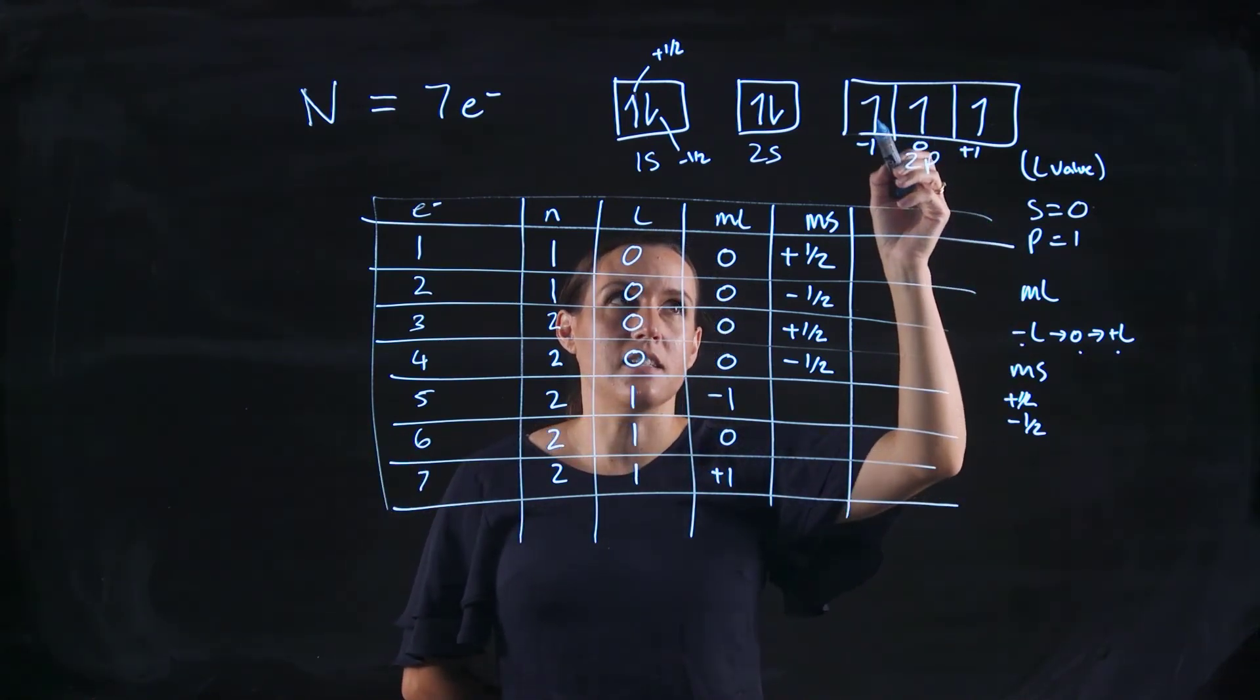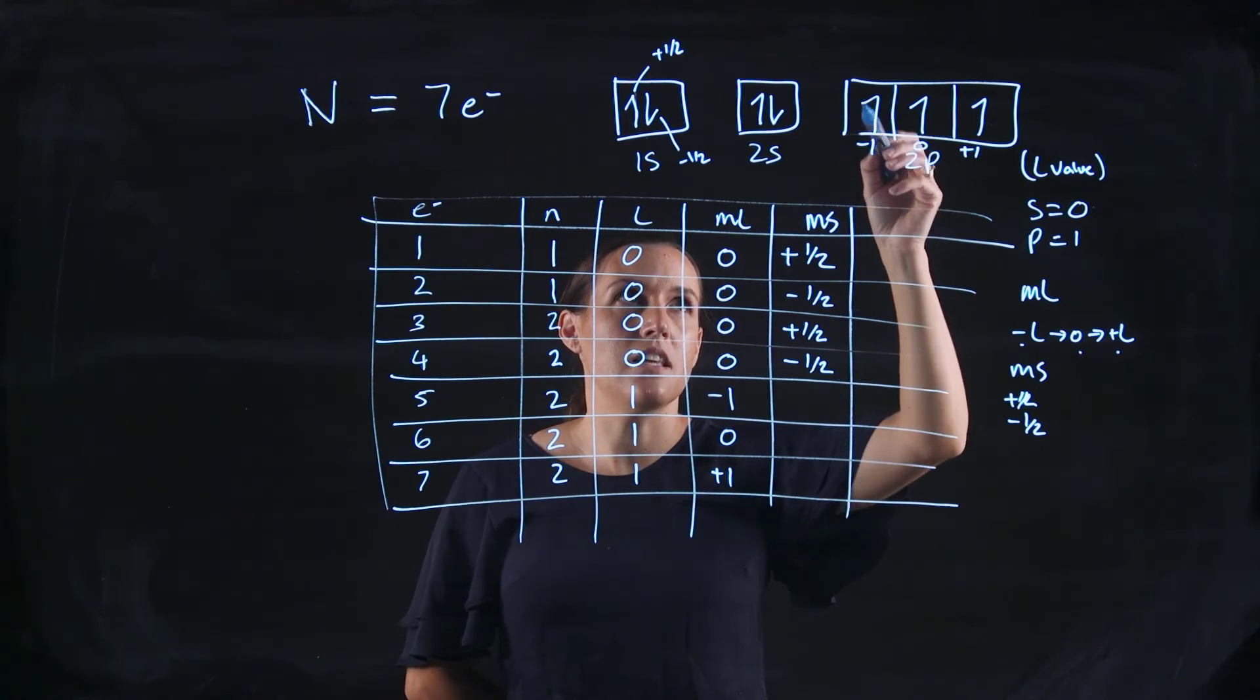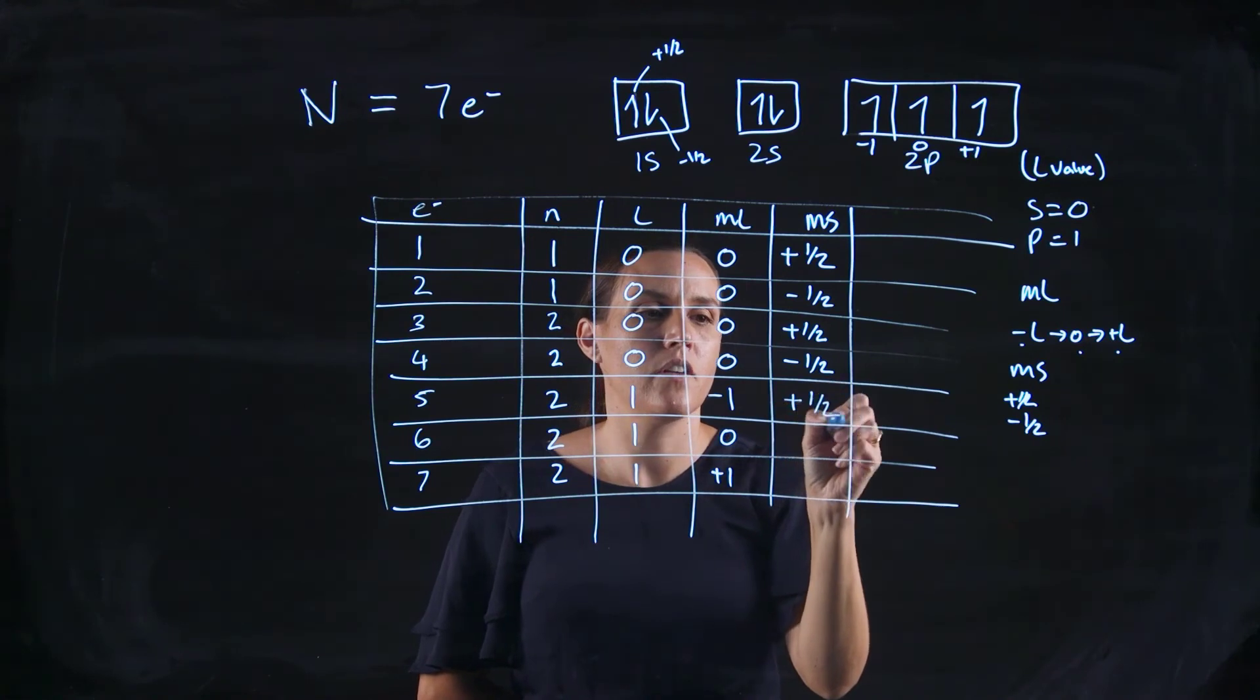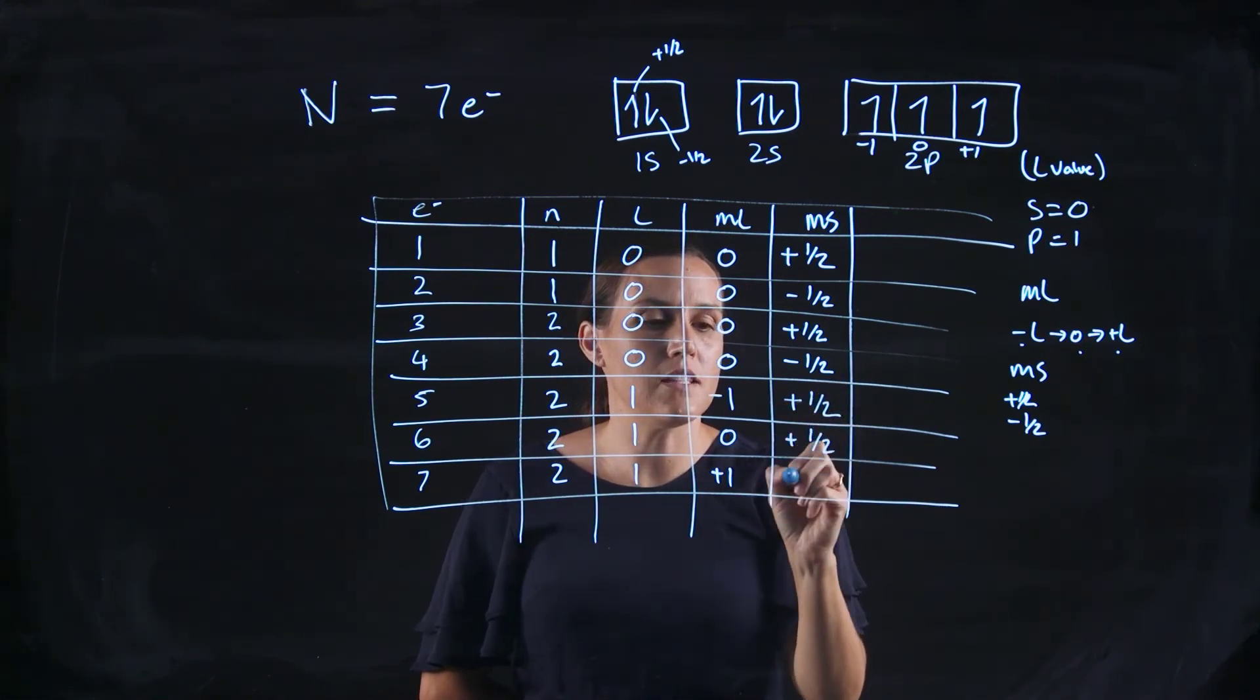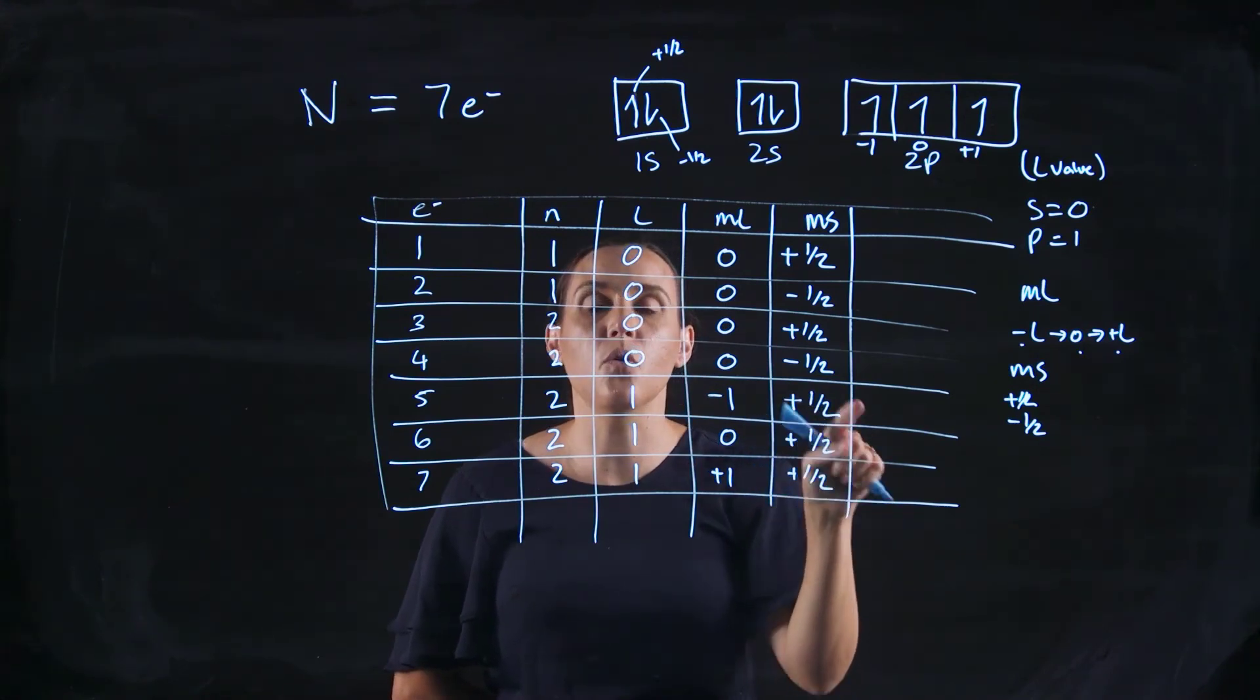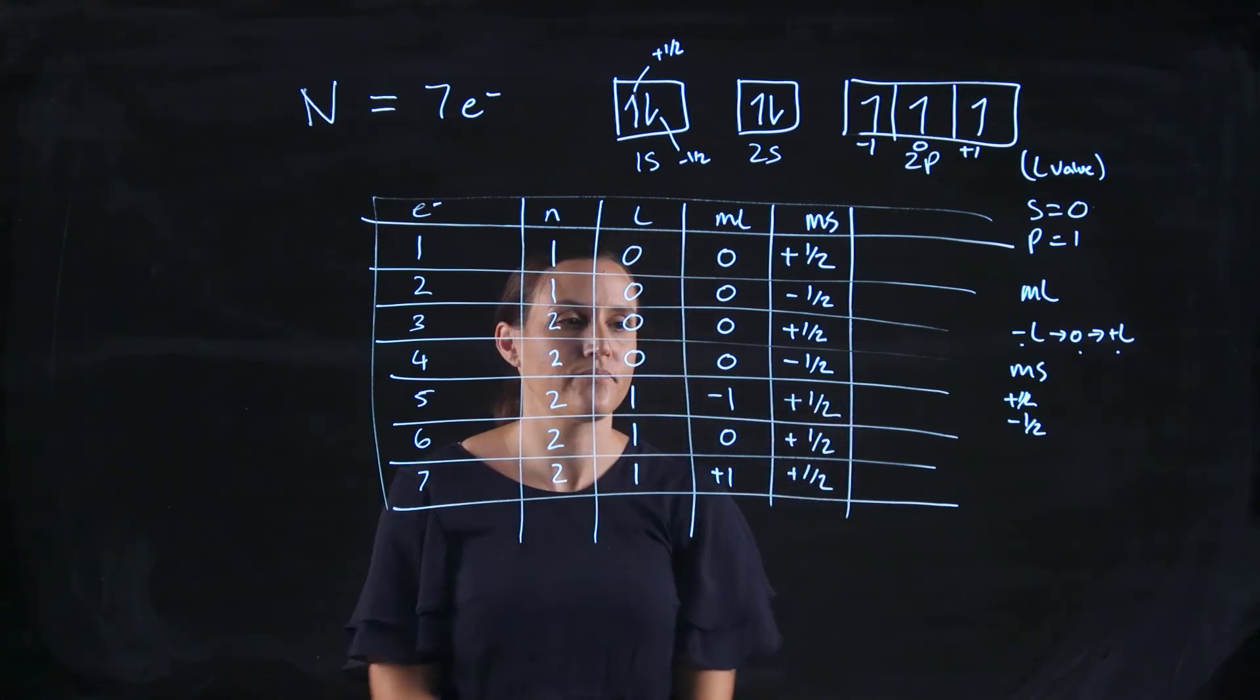Now looking at the ms, these are all upwards, so I've chosen to label that as plus 1 half. If you want to label these as minus 1 half, that's fine. Your answer will just have negatives for all of these, but they will all be the same if you follow the rules. So whether you choose plus 1 half or minus 1 half, it doesn't really matter.